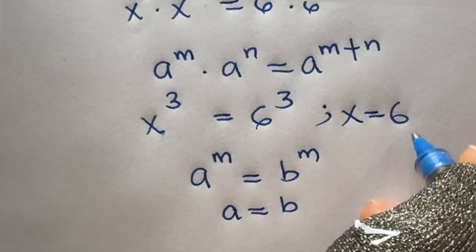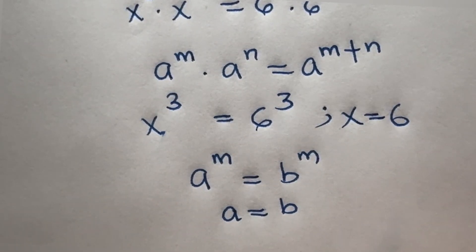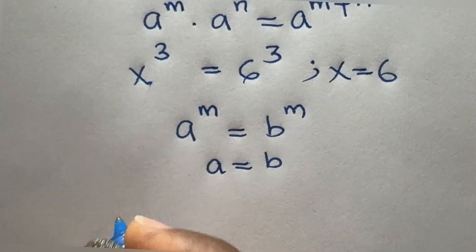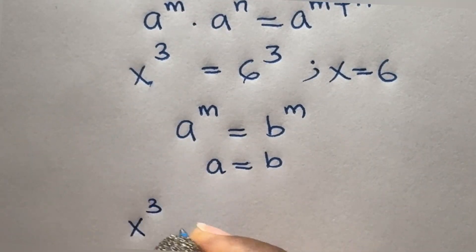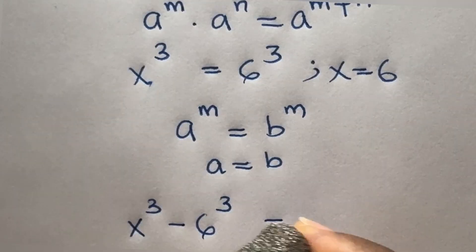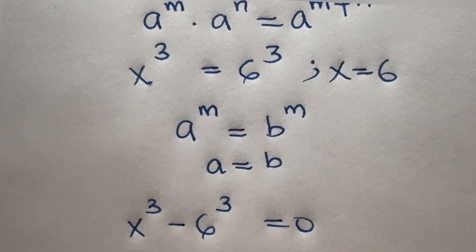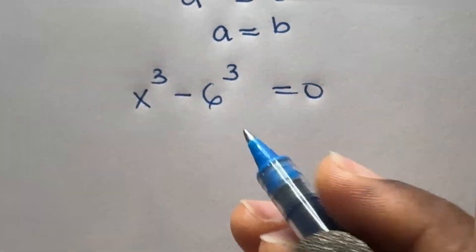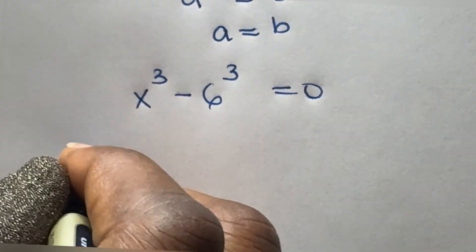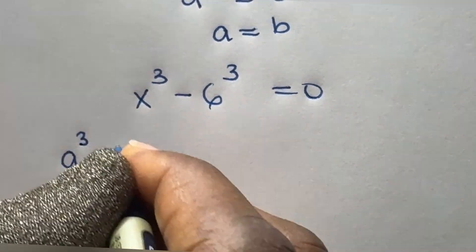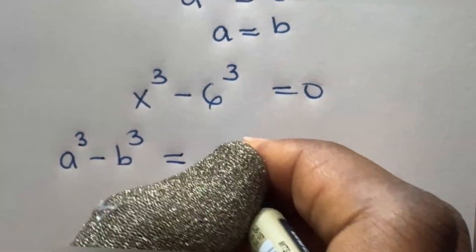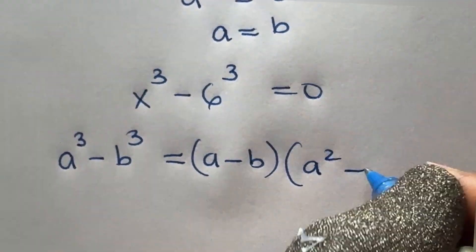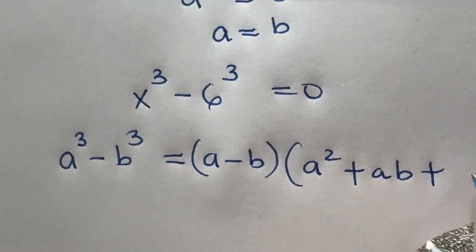However, our solution would end there giving us only one value for x. But if we proceed by transferring the right side to the left, giving us x raised to power 3 minus 6 raised to power 3 equals 0, we can obtain more solutions. Recall the identity: a raised to power 3 minus b raised to power 3 factorizes as a minus b times a squared plus ab plus b squared.